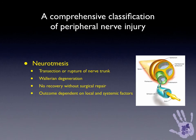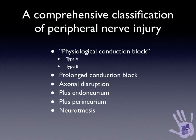Neurotomesis is the transection of a nerve, where Wallerian degeneration occurs, and surgery is imperative if any recovery is to be attained. The outcome of this type of injury is dependent on both local and systemic factors. The comprehensive classification system I use for peripheral nerve injury is: physiological conduction block type A — intra-neural circulatory arrest and ischaemia; type B — oedema; prolonged conduction block with demyelination; then progressive axonal loss with disruption of axons in isolation, then endoneurium, then perineurium; and finally neurotomesis.